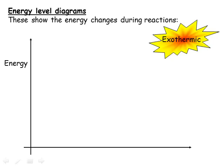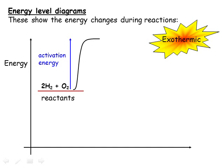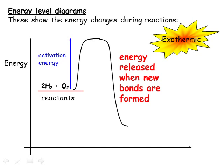We can visualise exothermic reactions using an energy level diagram, which might also be called an enthalpy profile diagram. The y-axis is an enthalpy axis showing the amount of chemical energy. We show the level of energy in our reactants and label this with their formulae. We then put in energy to break the bonds in the reactants, which we label as the activation energy. Then we release energy as we form the bonds in the products — for an exothermic reaction, this is more than the energy we put in. Finally, we label the overall energy change between the two levels, which is delta H.